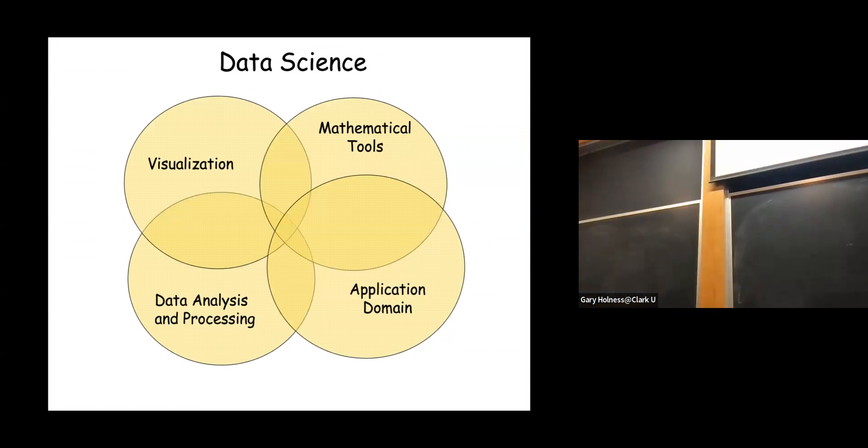So the key question first: what is data science? It's basically the confluence of four major areas. Visualization, and the purpose of that is twofold: to help guide your model decisions that you're going to apply to your data, as well as for the reporting and communicating of those insights, those nuggets of information hiding within the data that you extract. We also have mathematical tools, which are primarily probability and statistics. Then there's data analysis and data processing, that's the transformation, the operating on your data. And lastly, we have the application domain.